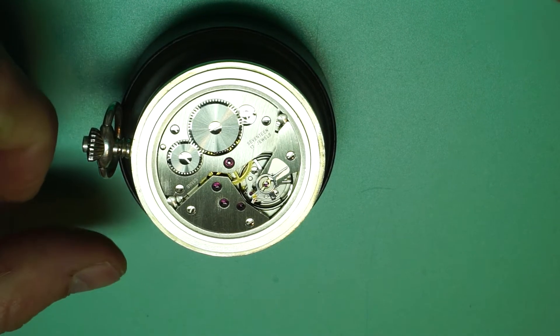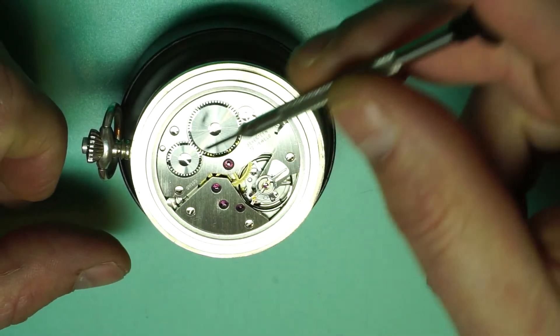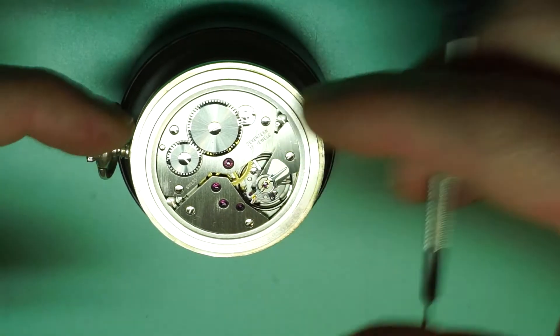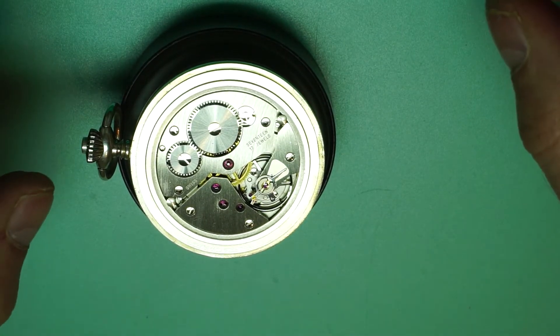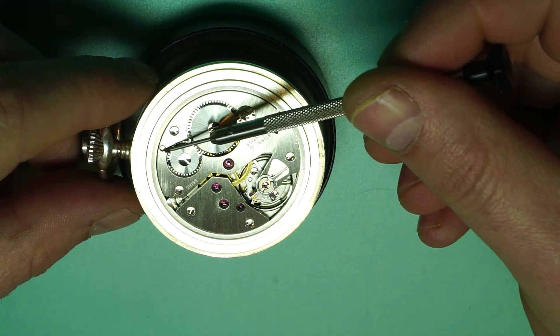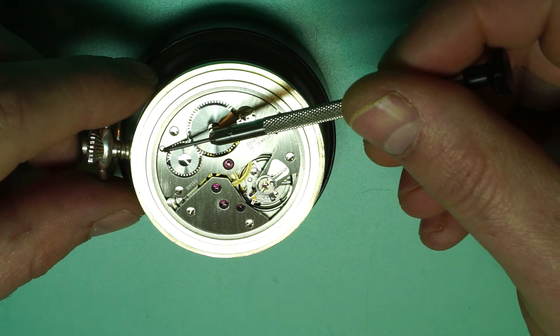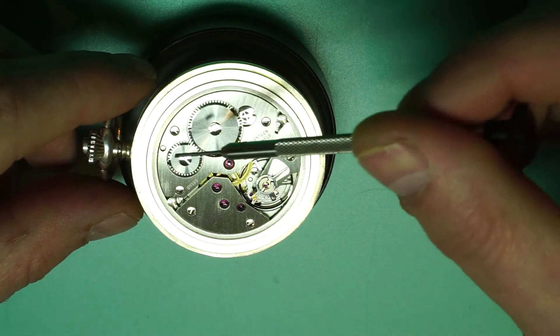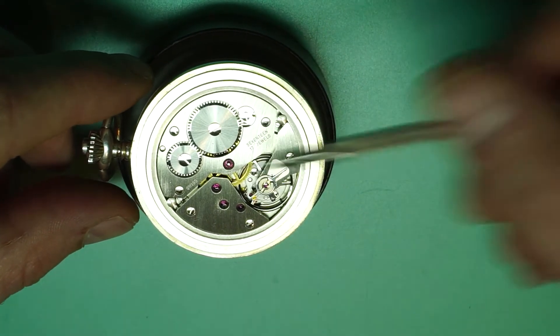So the next stage in order to remove the movement from the case we want to remove the stem so that the movement can clearly come through the rest of the casing. So just here about the crown wheel you'll usually find a small screw and this is the setting lever bolt.